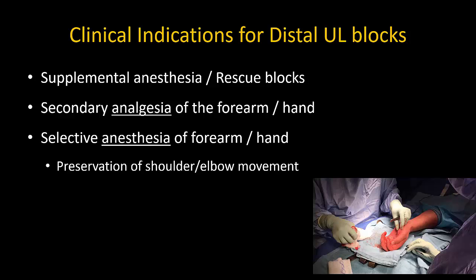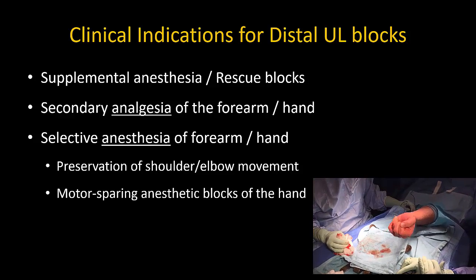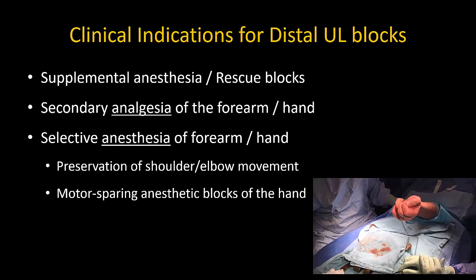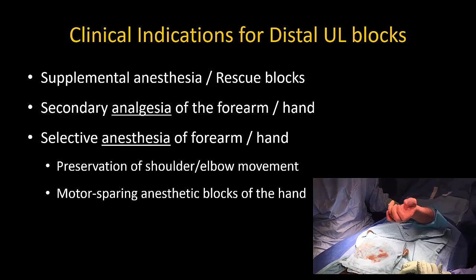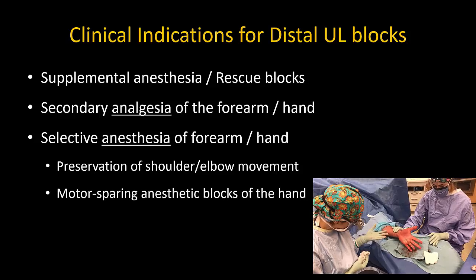Third, primary surgical anesthesia may be used if brachial plexus block is not feasible, or to avoid its adverse effects, including unnecessary and excessive motor or sensory block. Preservation of independent movement at the shoulder and elbow can be beneficial for patient comfort and safety. In addition, certain surgical repairs may benefit from intraoperative motor testing by having patients make voluntary hand movements intraoperatively. This will be discussed in a later video.